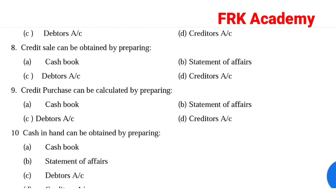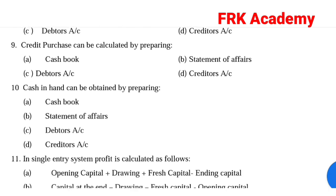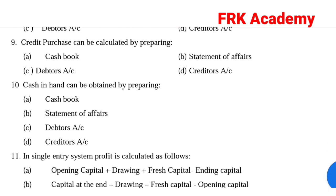Fifth question: Credit purchases can be calculated by preparing. Answer: Option D, creditors account. Credit purchases are calculated using the creditors account.